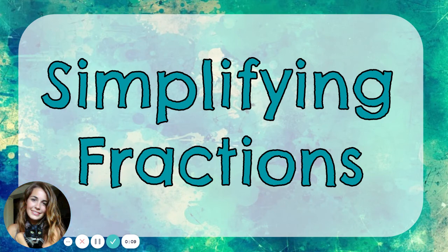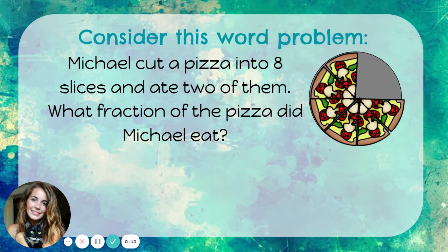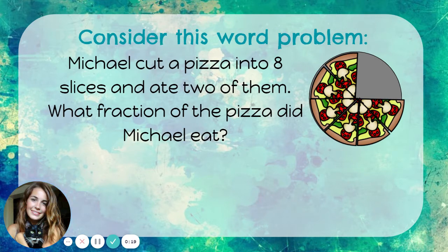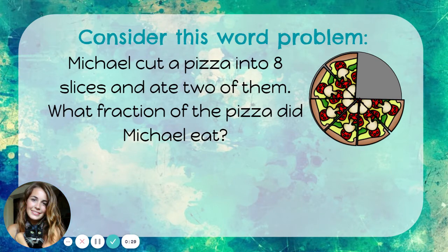Simplifying fractions. Consider this word problem. Michael cut a pizza into eight slices and ate two of them. What fraction of the pizza did Michael eat? I can see that there were eight pieces, but he ate two of them. So he ate two out of eight pieces of pizza, or two-eighths of a pizza.